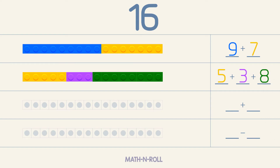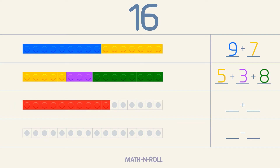Now make 16 by adding 2 numbers. Let's choose 10 for the first number. To make 16, we need 6 more pieces. So 10 plus 6 equals 16.